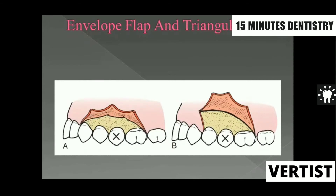Whenever we need to avoid these problems — limited access — we can add one more vertical incision along this line, as you can see. This is called a triangular flap. Along with the horizontal incision, we place one more vertical incision, making it triangular. Why triangular? Because there is always a base, and three surfaces are present on this flap.